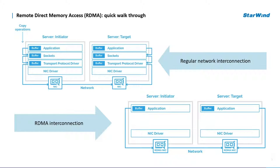There are several well-known RDMA implementations. You may know them: it's InfiniBand, RDMA over converged Ethernet also well known as RoCE, and Ethernet wide area RDMA protocol also known as iWARP. So how does RDMA really work? In order to find out, let's compare RDMA with a regular network interconnection.